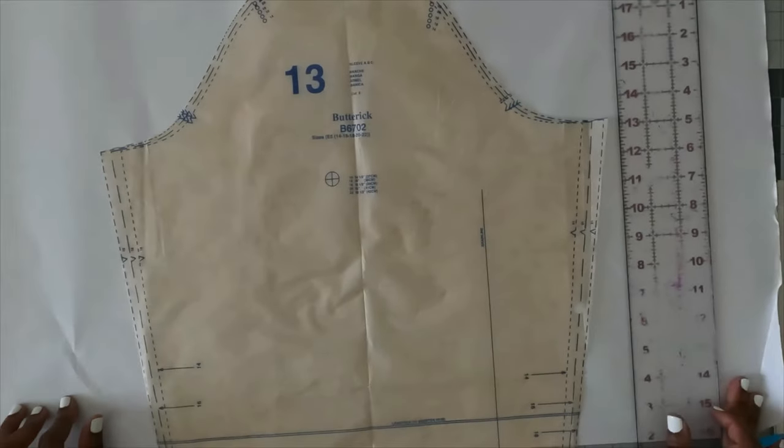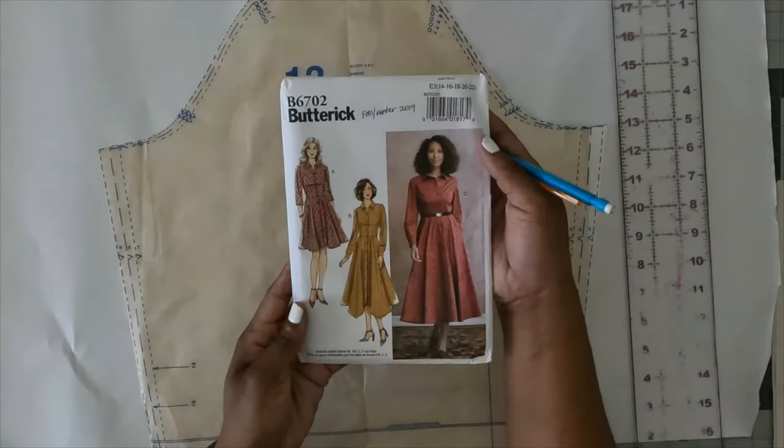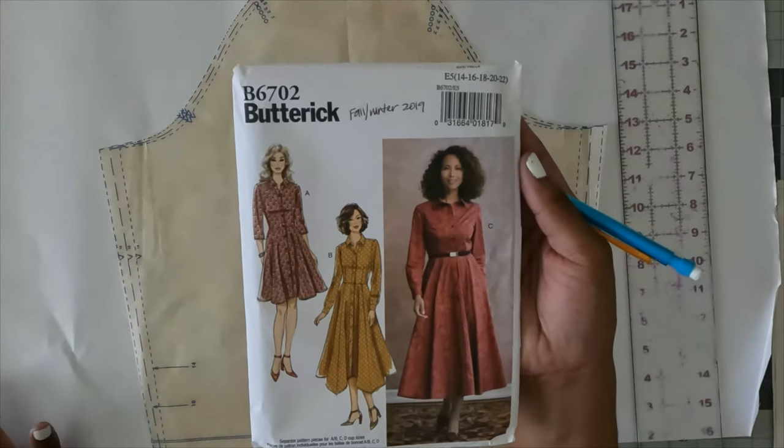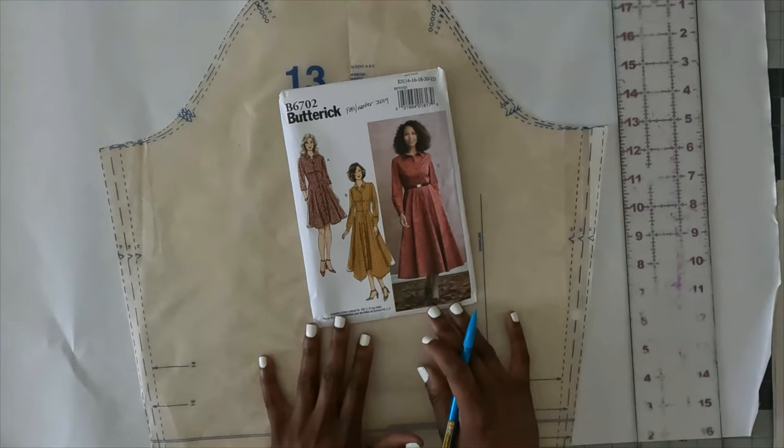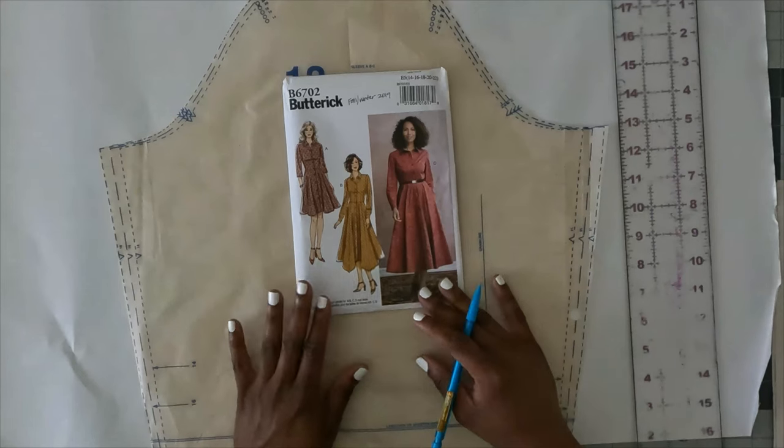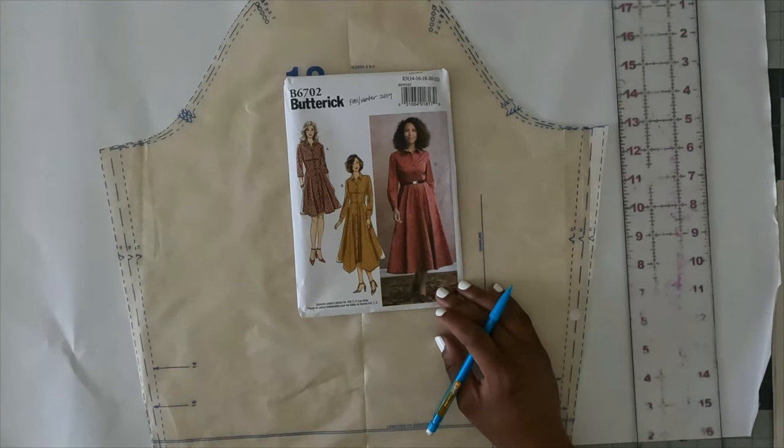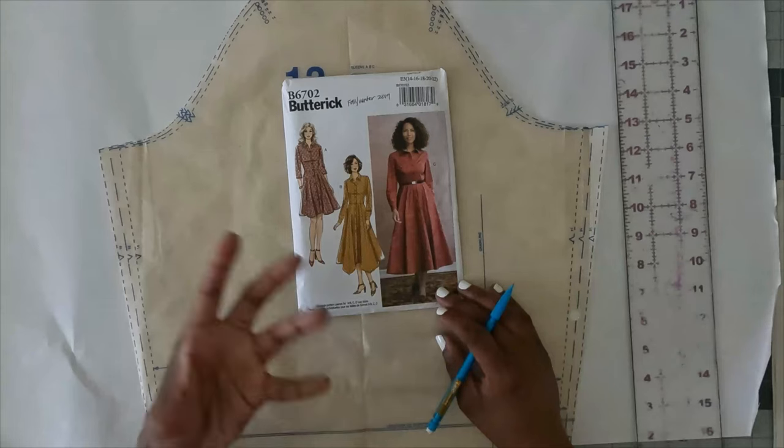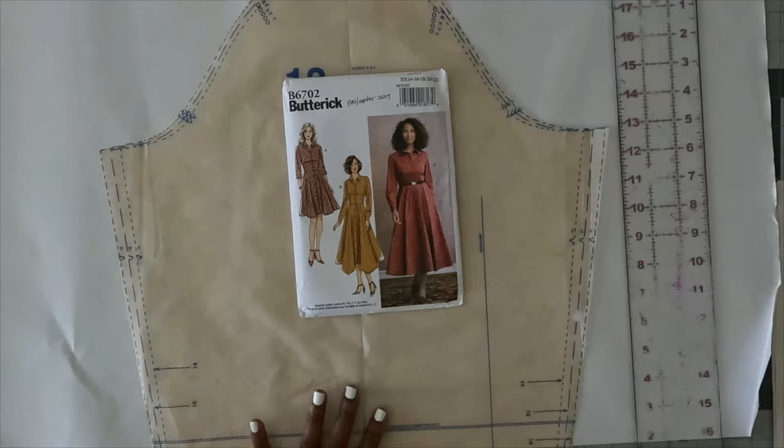All right, so I'm going to show you the modifications that I'm going to make to Butterick 6702, which is the first dress in the Battle of the Shirt Dress series. So I picked this pattern because I know most people will not pick this pattern as a shirt dress pattern. And because I have done Butterick 6640 already, I wanted to choose a different pattern for Butterick that's kind of newer as well.